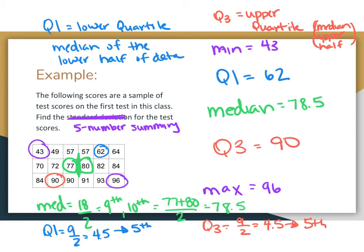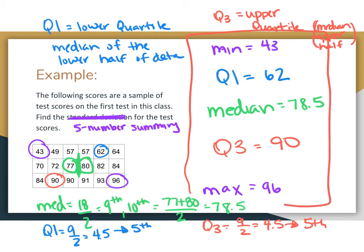This gives us the five-number summary for this data set, which tells us the position of the data values. Now we're going to look at this in terms of a box and whisker plot.